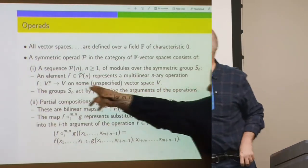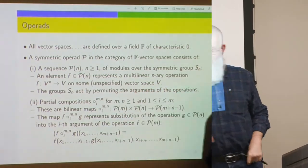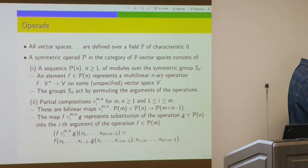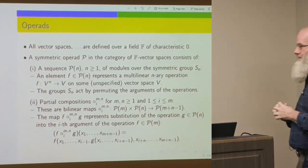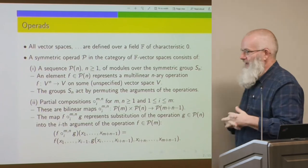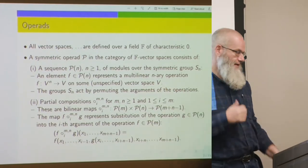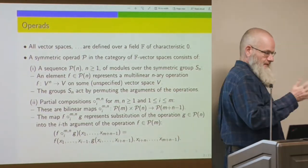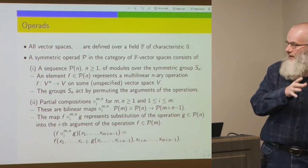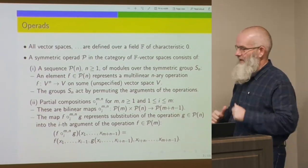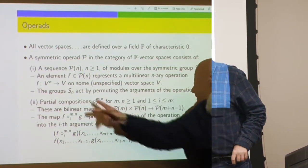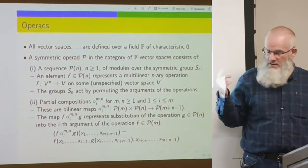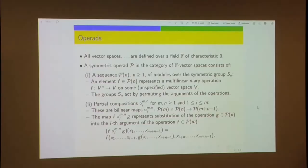Operad purists would object to even mentioning this — operads are supposed to be just an abstract representation of operations. Thinking of an underlying vector space is like thinking of a group as a group of permutations, whereas thinking of the operad itself is like thinking of an abstract group. The group S_n acts by permuting the arguments of the operations.